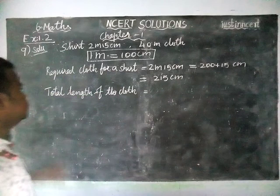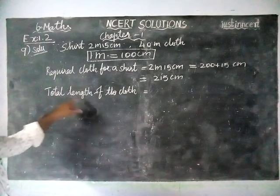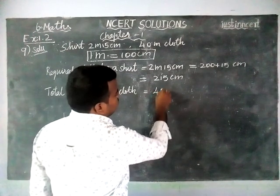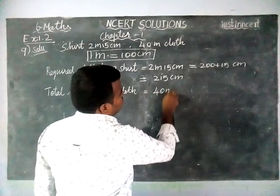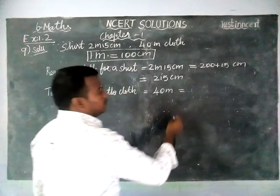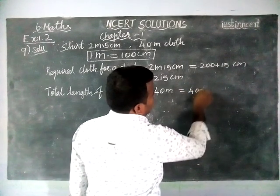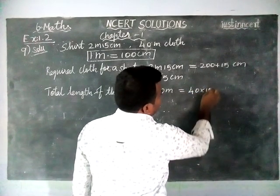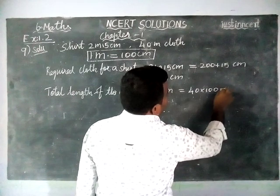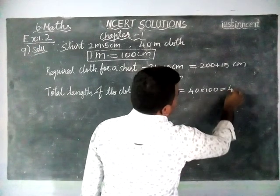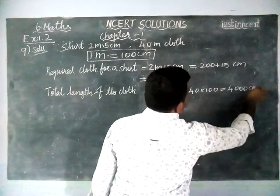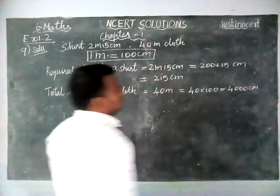Now, the total length of the cloth is equal to 40 meter. Both also need to be the same unit, so we are going to convert this into centimeter. 40 into 100 is equal to 4000 centimeter.